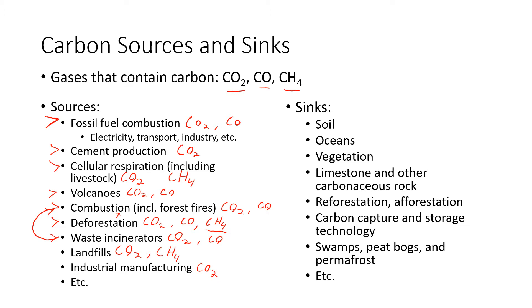Carbon dioxide is really the one we're worried about the most. Methane is a more potent greenhouse gas than carbon dioxide, so we're definitely worried about that too. Carbon monoxide typically comes from incomplete combustion, but there's often much less of it being released than carbon dioxide. For the sinks — a sink is anything that stores carbon for a very long period of time, any process that draws carbon down and stores it. Soil is a great carbon sink. There are tons of carbon locked in soil, primarily from vegetation putting organic matter into the soil, but also from inorganic carbon in the soil.